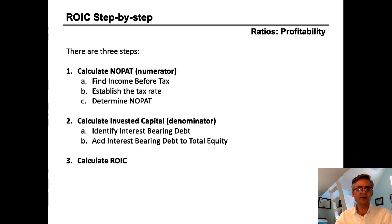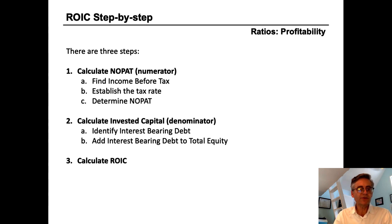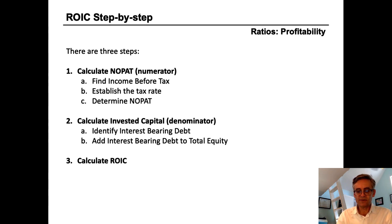To calculate return on invested capital, there are three steps. Step one, you calculate the numerator — that's NOPAT. Step two, we calculate invested capital for the denominator. And then step three, we divide the result from step one by the result from step two, and derive return on invested capital.